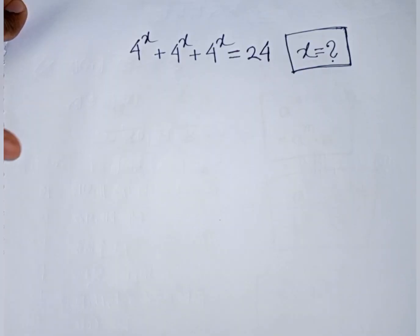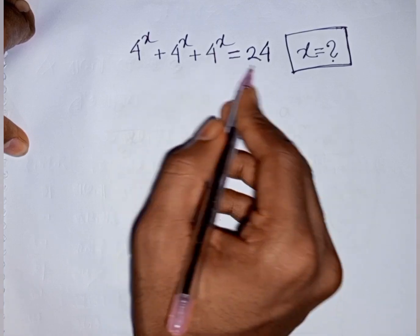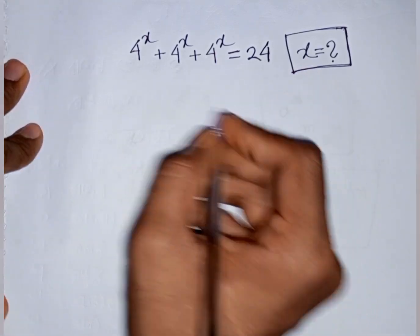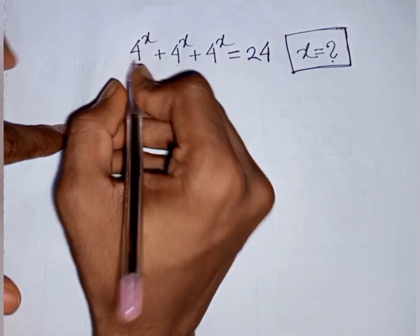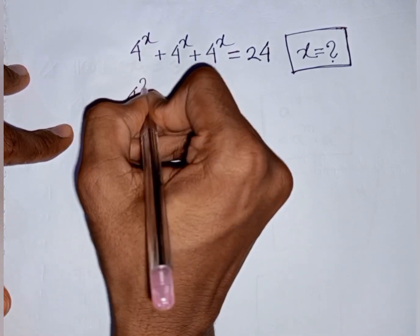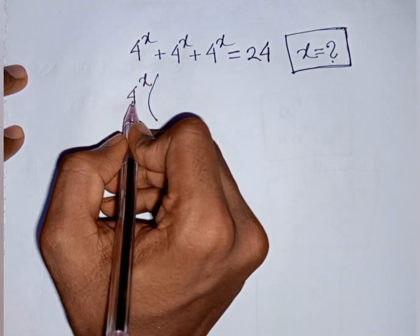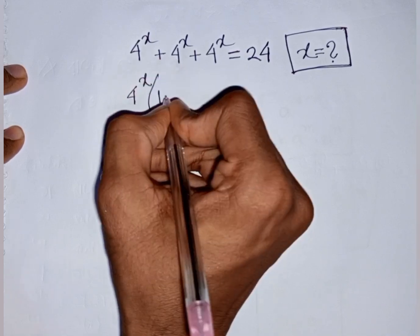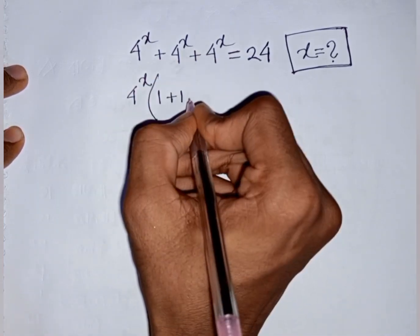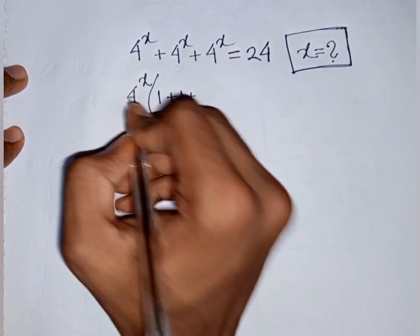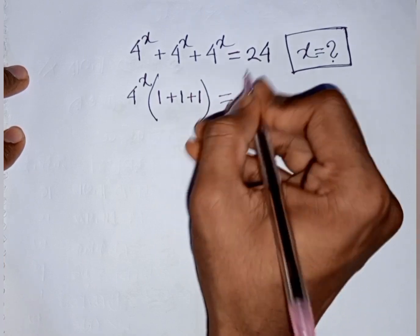Now a new problem: 4 power x plus 4 power x plus 4 power x plus 4 power x equals 24. Find the value of x. We see 4 power x is common on the left side, so we take 4 power x out of the bracket. Each term divided by 4 power x gives 1, so we have 4 power x times (1 plus 1 plus 1 plus 1) equals 24.